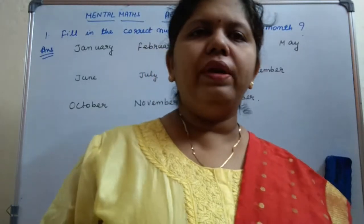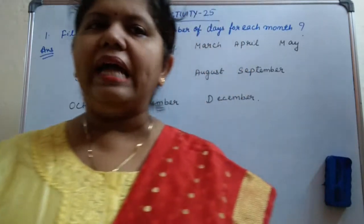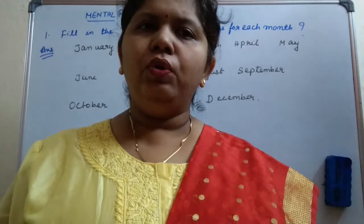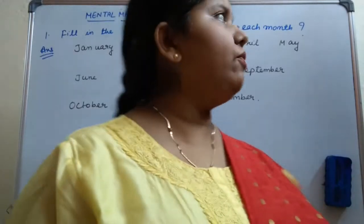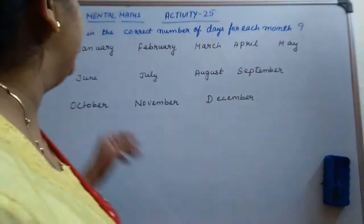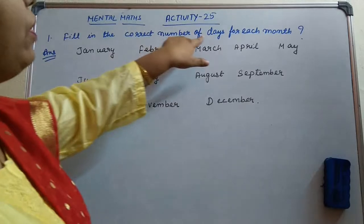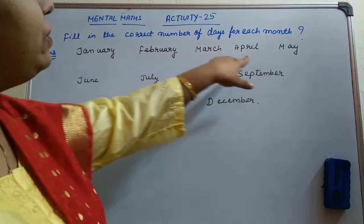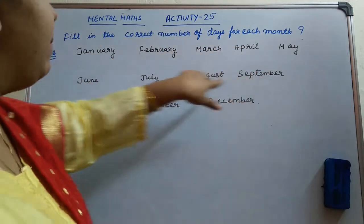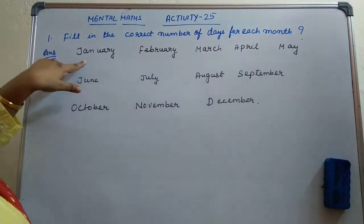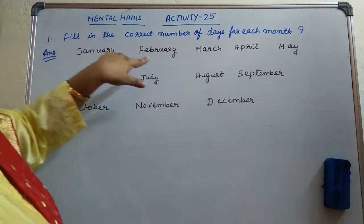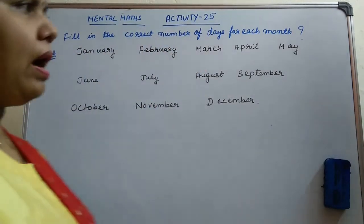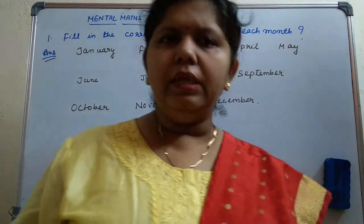Okay children, now we will do activity 25 of mental maths. Please go through the first question. The first question tells that you have to fill in the correct number of days for each month. I have written the names of these months and below it we have to write the number of days for each month.